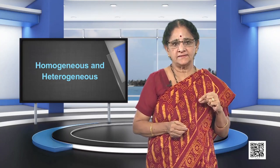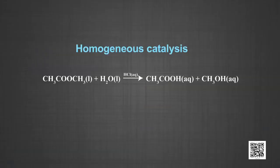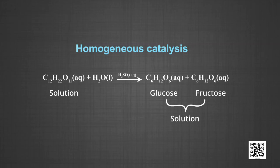Number two: hydrolysis of methyl acetate is catalyzed by H+ ions furnished by hydrochloric acid. Methyl acetate is hydrolyzed in the presence of hydrochloric acid to give acetic acid and methanol. Both the reactants and the catalyst are in the same liquid phase. Number three: hydrolysis of sugar is catalyzed by H+ ions furnished by sulphuric acid. An aqueous solution of sugar reacts with water in the presence of sulphuric acid to give aqueous solutions of glucose and fructose. The reactants and the catalyst are in the same liquid phase.